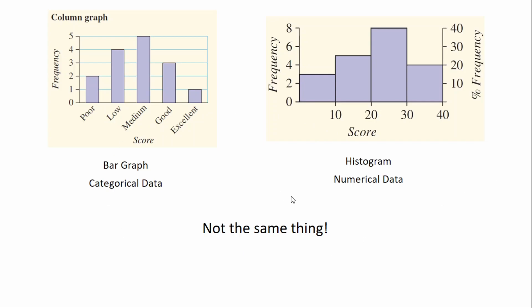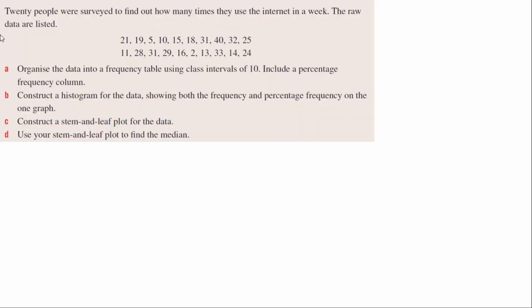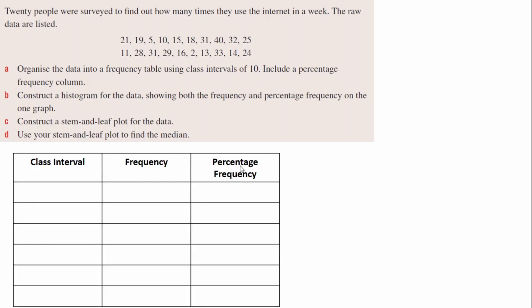Now let's have a go at an example question. 20 people were surveyed to find out how many times they use the internet in a week. Question A says: organize the data into a frequency table using class intervals of 10, and include a percentage frequency column. We draw a table with class interval on the left, frequency in the middle, and percentage frequency on the right. Our groups are 0–10, 10–20, 20–30, 30–40, and 40–50.